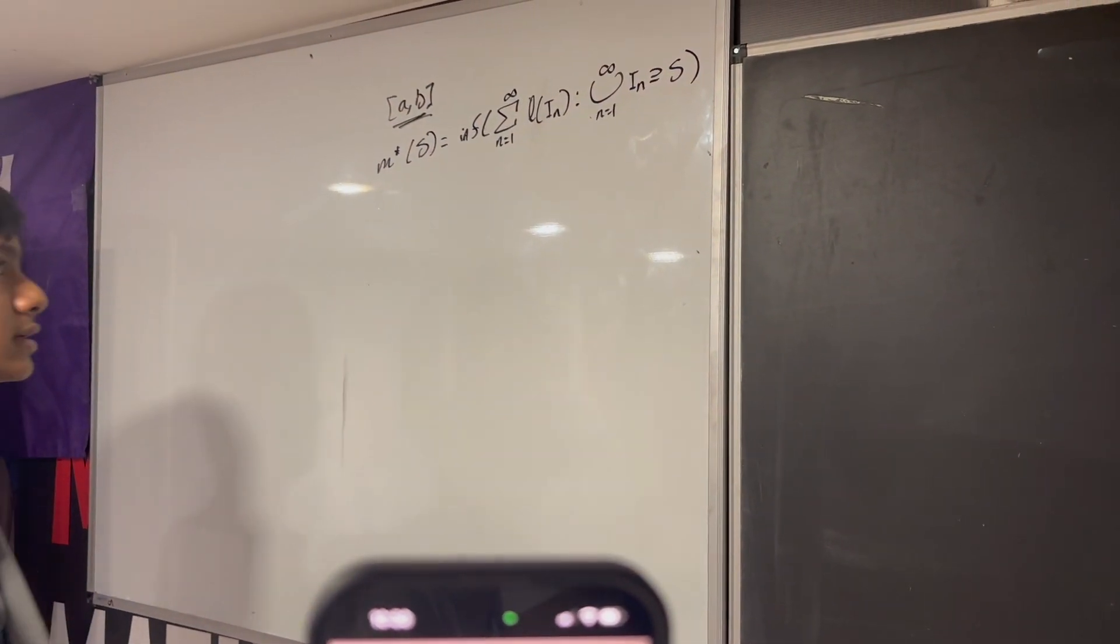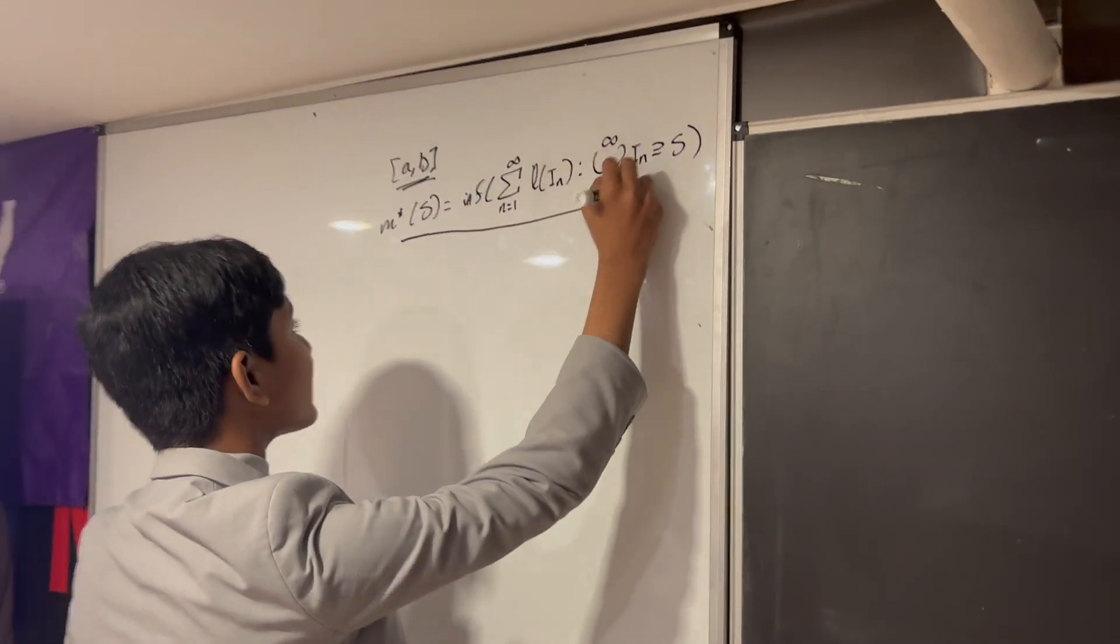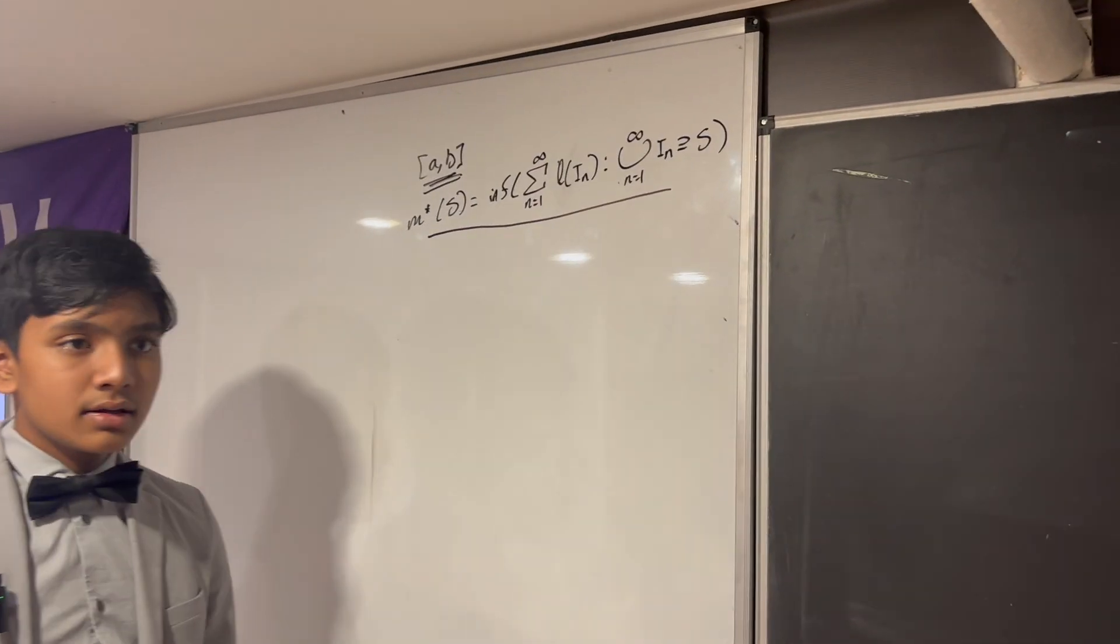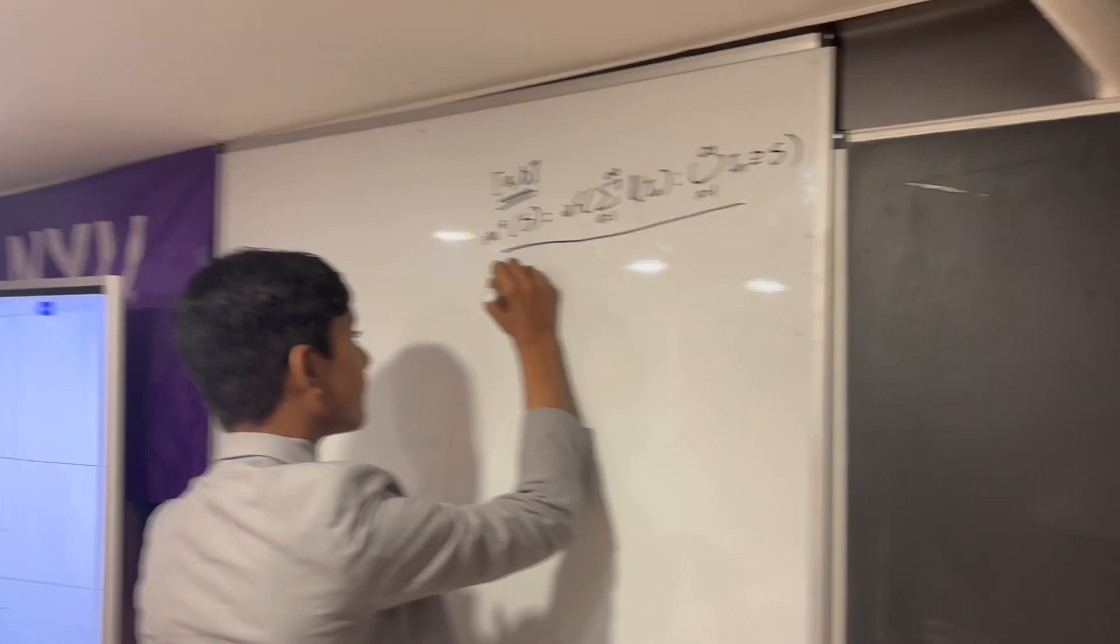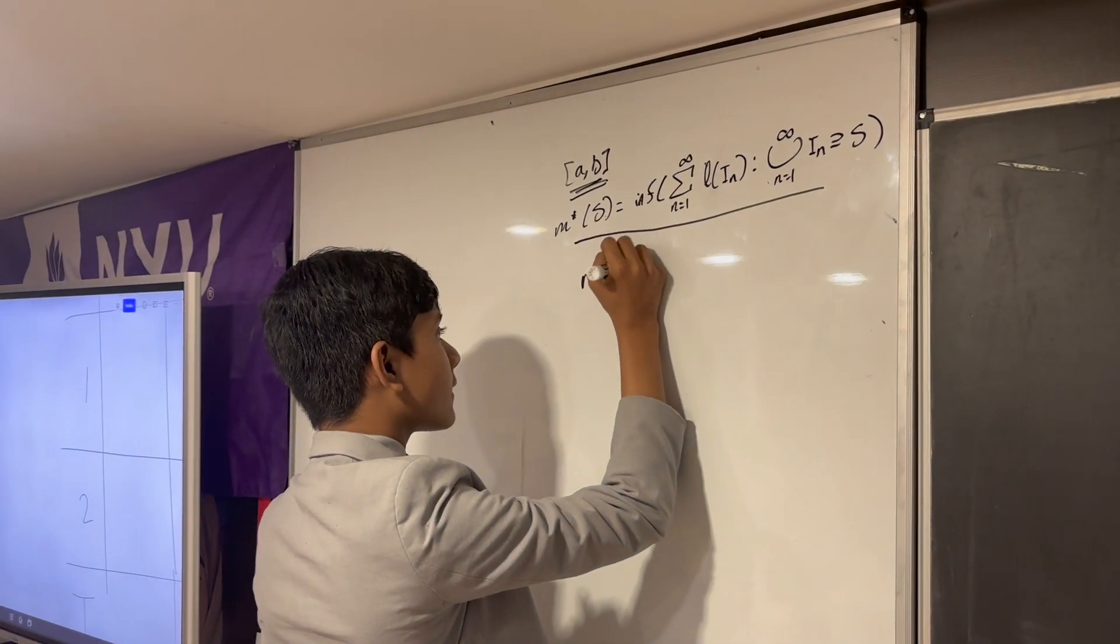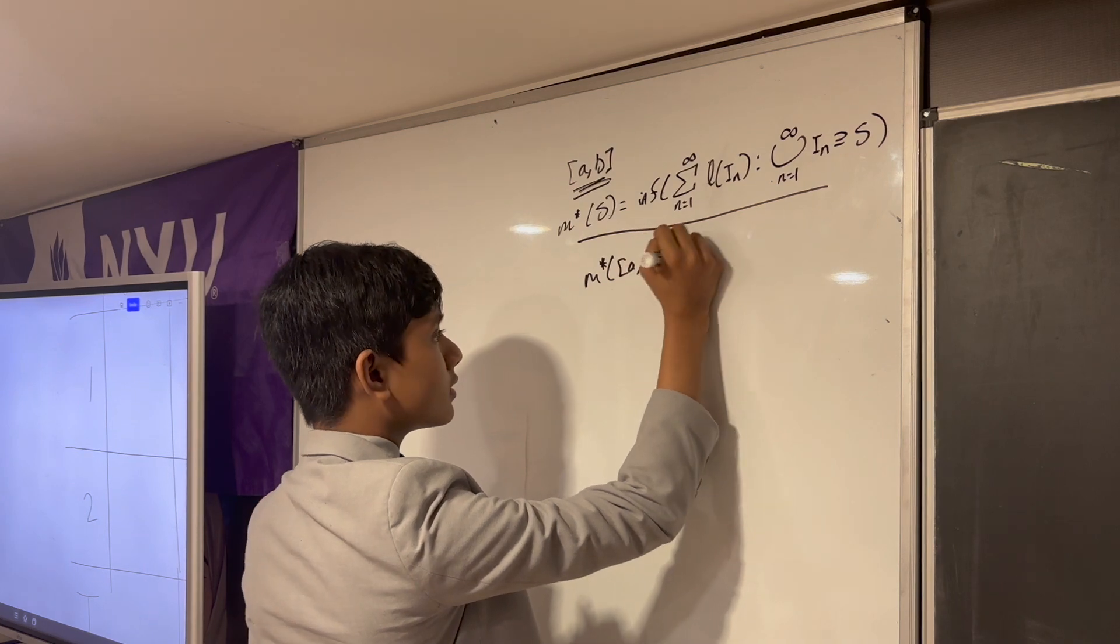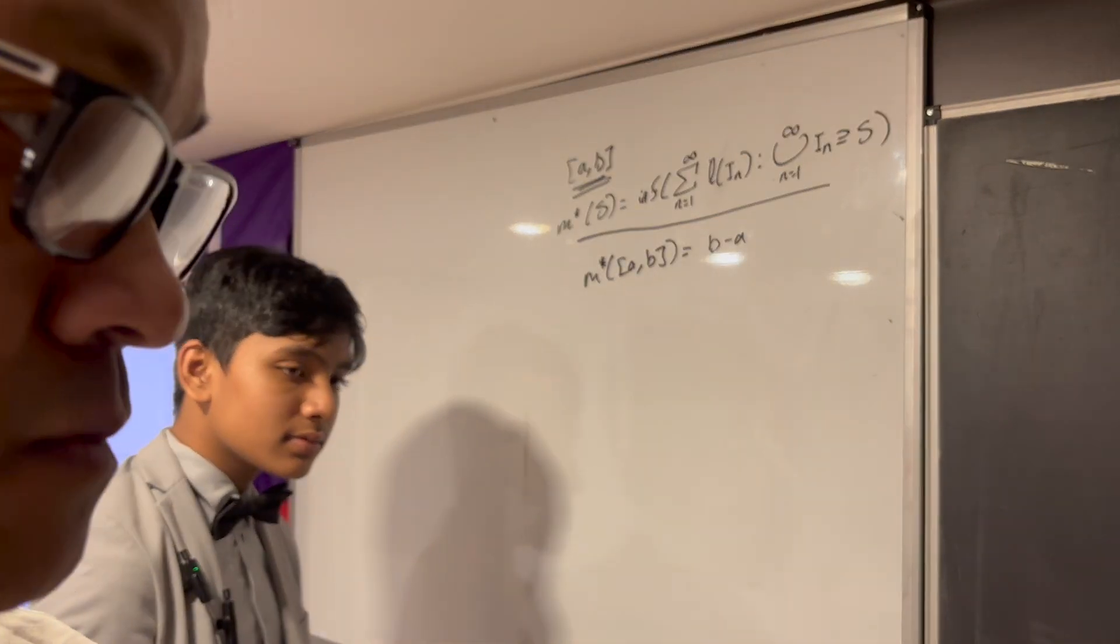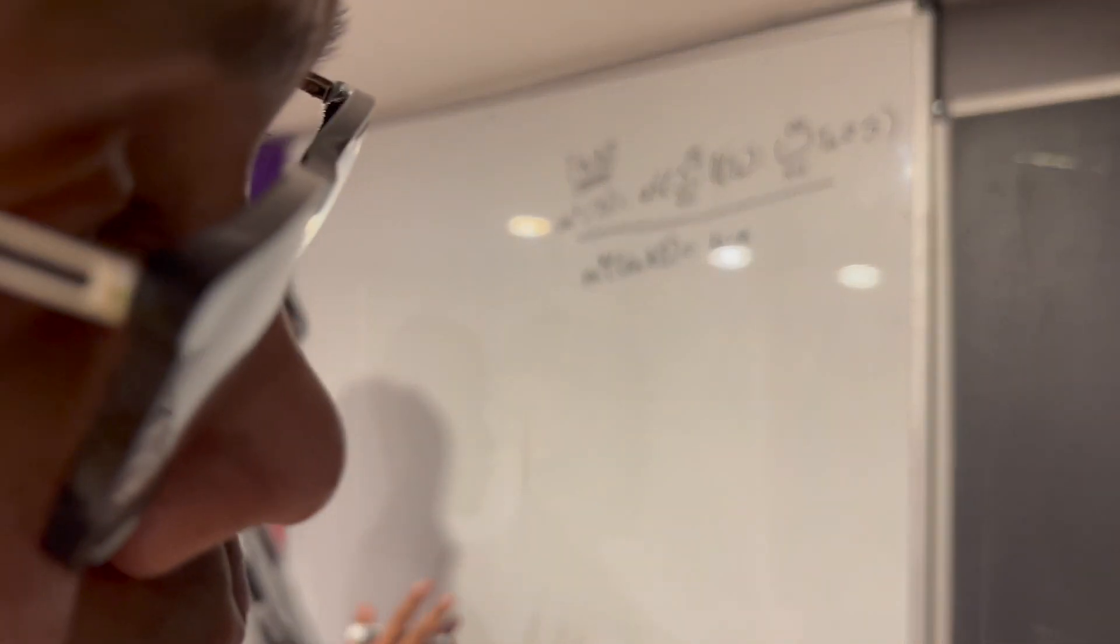Alright. So let's try that for an interval from A to B. So we're going to show that this is equal to this. So the first step is, well, we have to bound it somehow.